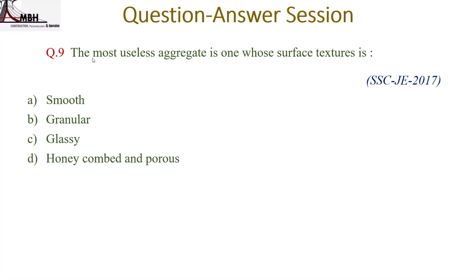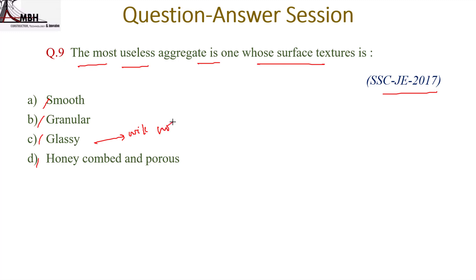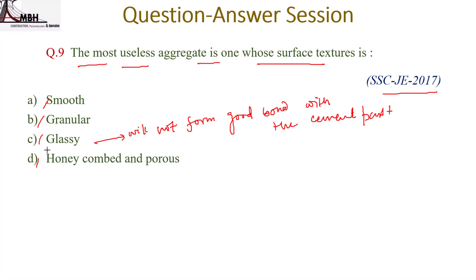Next question: the most useless aggregate is one whose surface structure is — smooth, angular, glassy, honeycombed and porous. This is a 2017 question. Glassy surface structure generally will not bond well with cement paste. So glassy aggregate surface is the most useless. The correct option is glassy.